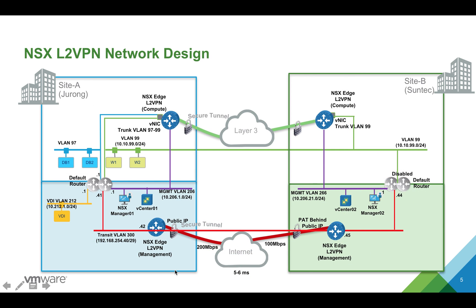Before I begin my demo, let me share my network design. I have two sites in Singapore — one is in Jurong and one is in SunTech. They are connected via the internet. Bandwidth for the Jurong site is about 200 Mbps and the SunTech site is about 100 Mbps. Latency between the two sites is about 5 to 6 milliseconds.